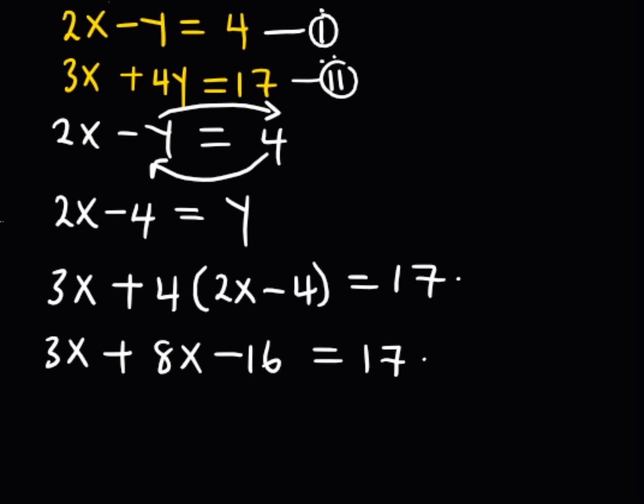3x plus 8x, I obtain 11x, everything is equal to, I carry this 16 to the right-hand side, it is negative. When it crosses the equal signs, it is going to become positive. So that is 17 plus 16.